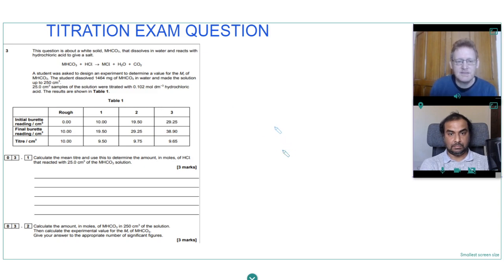Okay, so today we're going to have a look at a titration exam question. The question is about a white solid, MHCO3, that dissolves in water and reacts with hydrochloric acid to give a salt. The student was asked to design an experiment to determine the value for the MR of MHCO3. You can see the student dissolved 1464 milligrams of this in water and made the solution up to 250 centimeters cubed. 25 centimeter cubed samples of the solution were titrated with hydrochloric acid and shown below.